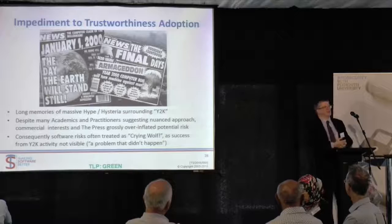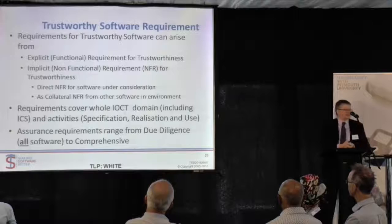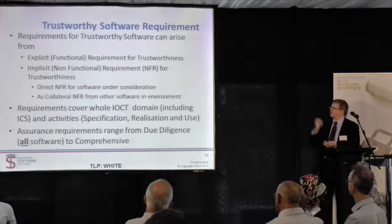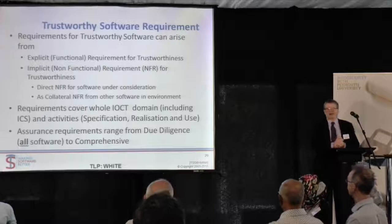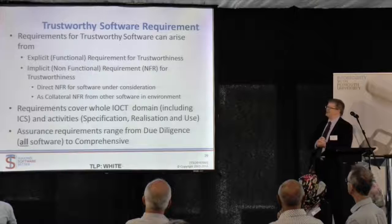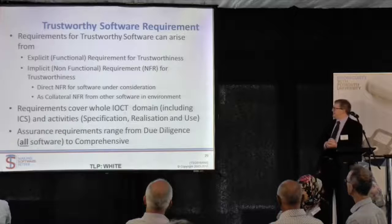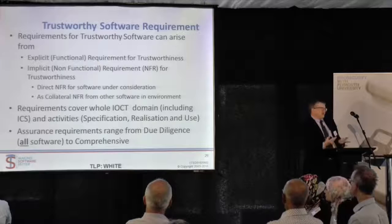The Year 2000 was actually a success story, but it's regarded as a crying-wolf problem, and we have to get beyond that. The requirements for trustworthy software can arise from multiple sources. There are people who explicitly ask for it, but a whole chunk comes from Non-Functional Requirements — NFRs — implicit needs the customer never asked for but the delivery operator should consider. In mainstream engineering, when you're building a bridge, you think about strength even though the customer never asked for it. The software industry isn't quite as good at thinking about things the customer hasn't thought to ask for.